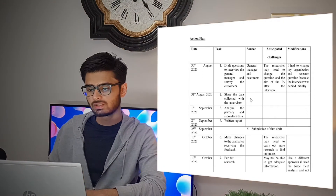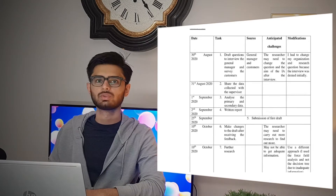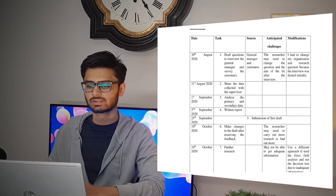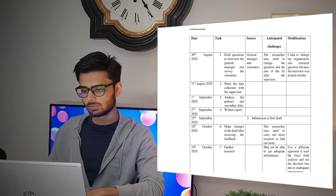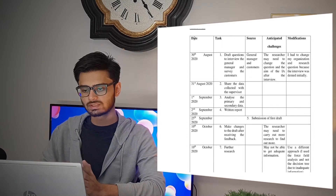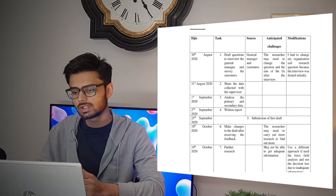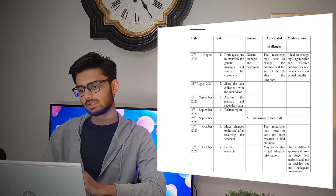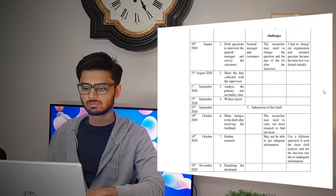Then comes the action plan. I used a table format because the examiner wouldn't want to read a long paragraph outlining all tasks and dates. I would suggest you use a table format as well. It's basically the date when you'll start a task, the task itself, the main source that will help you complete it, and the anticipated challenges with modifications you'll make. I have nine tasks and I think everyone will have some of these in common.